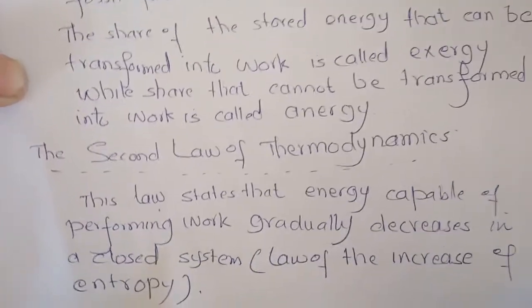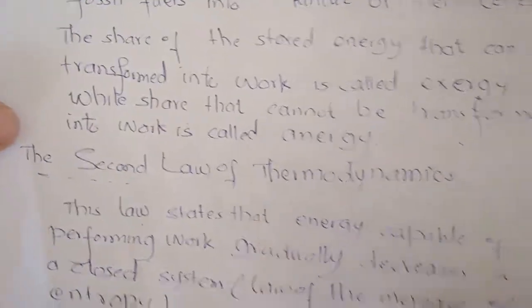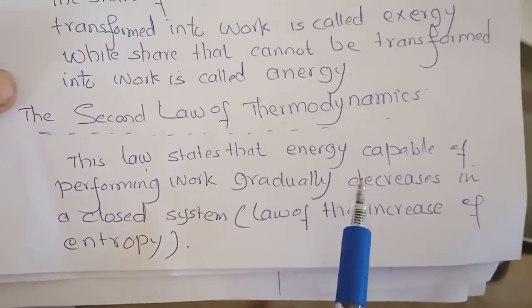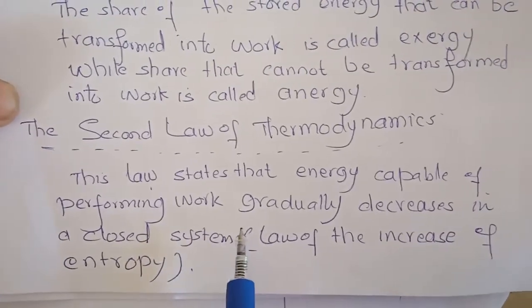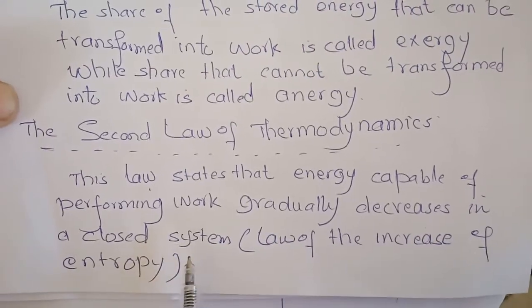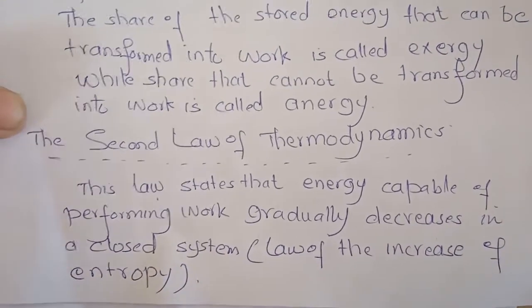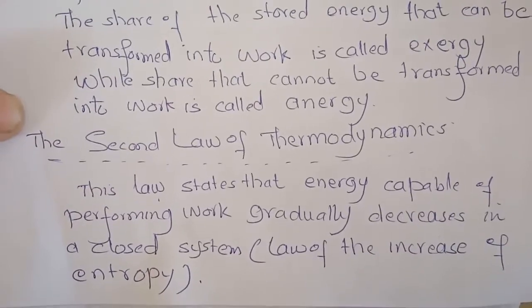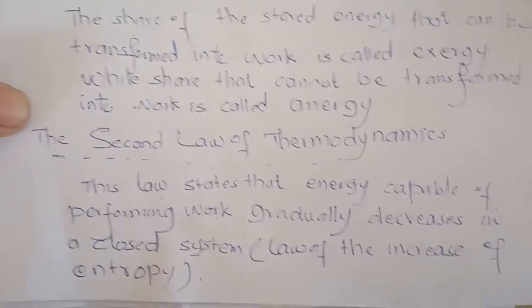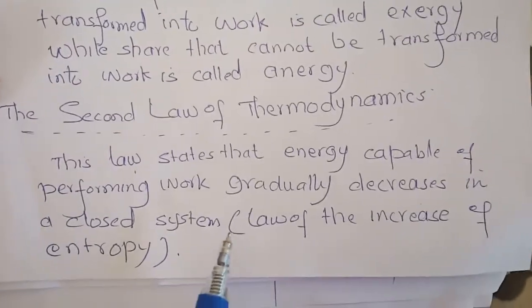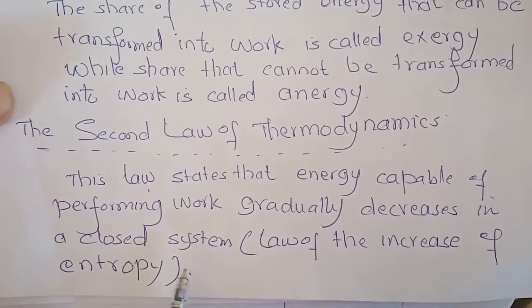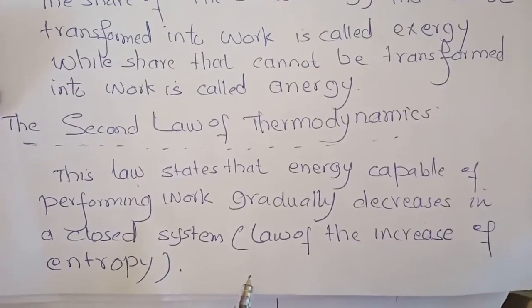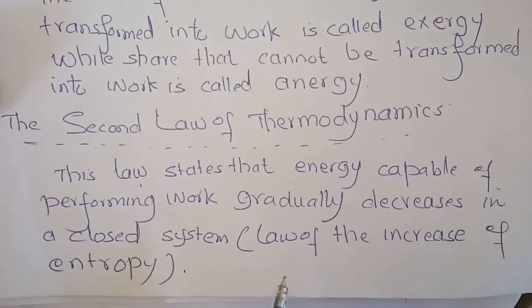The second law of thermodynamics states that energy which is capable of performing work gradually decreases in closed systems. This law is a bit different from the first law. According to this law, energy gradually decreases in closed systems. This is also called the law of the increase of entropy.